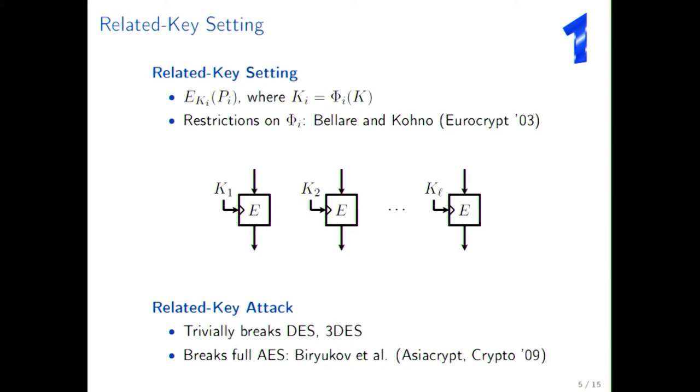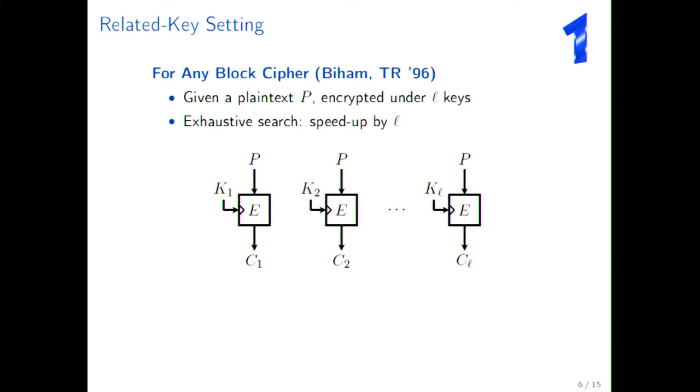So, what did Daemen and Rijmen specifically refer to? They said, well, we should take into account if you are going to look at related key security, you're actually considering a setting where you're going to have many different keys under which you will encrypt. And in such a case, if you're encrypting under different keys, you will always have a loss of security. This was shown already in 96 by Eli Biham, where he shows, and this is the example right here, if you have a certain plaintext, the same plaintext that you're going to encrypt under many different keys, let's say L different keys, then exhaustive search can be sped up by a factor of L. Basically, you're going to try exhaustively all keys, but you have an L times higher chance of hitting any of these keys, and then you will be able to break the system.